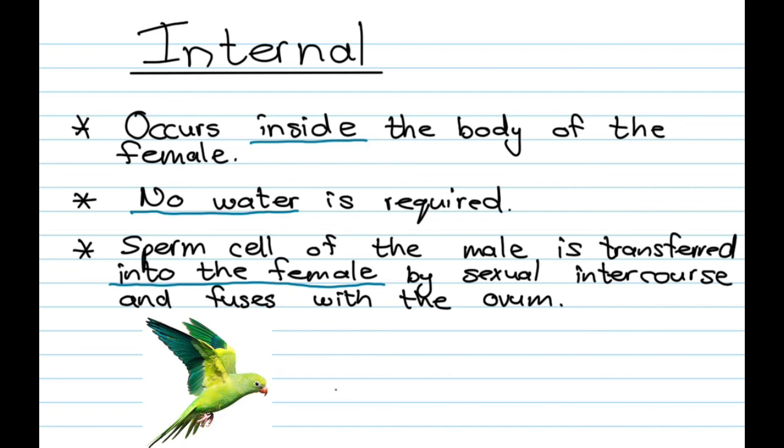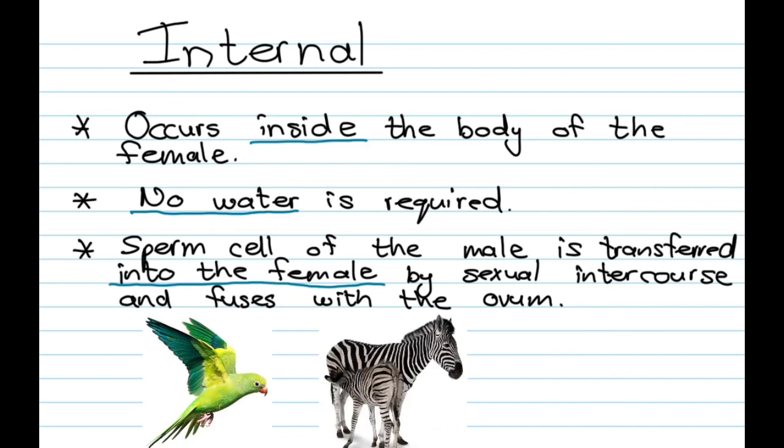And it's going to fuse with the ovum inside of the female. And our examples here include land animals like birds, most mammals and even insects.